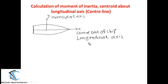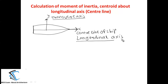I am looking at the ship from the top view and this is one of the waterplane areas. The x-axis of the ship is the longitudinal axis and the y-axis is the transverse axis — we have done the calculation for the transverse axis in earlier classes. The x-axis is the longitudinal axis, and this is the centre line of the ship about which the ship is symmetric.